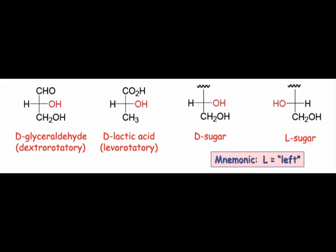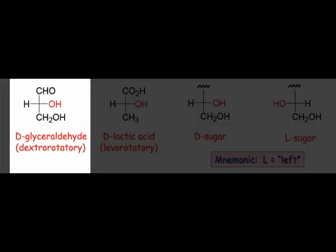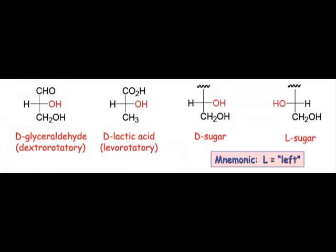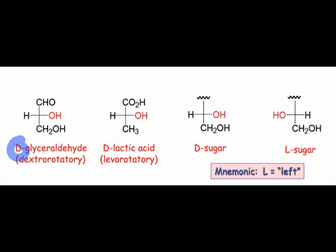Here are a few additional examples of triose sugars, with D-glyceraldehyde provided as a reference. Notice that the D and L designations of all of these refer to D-glyceraldehyde. The D and L nomenclature always refers to the lowest stereocenter in the Fischer projection.